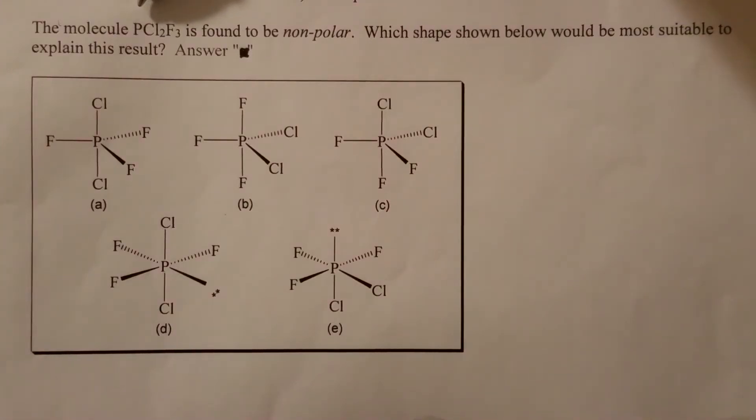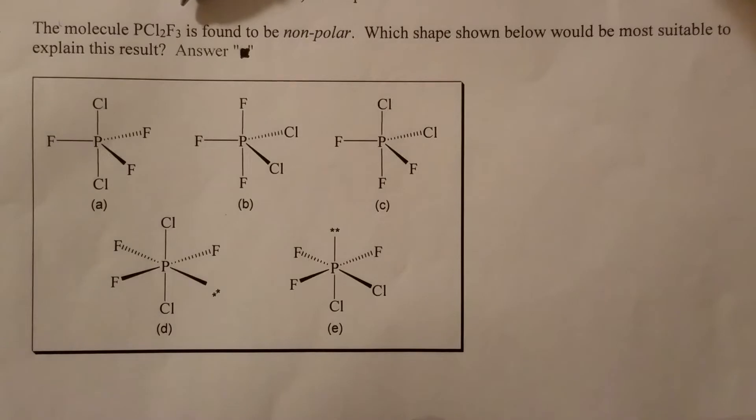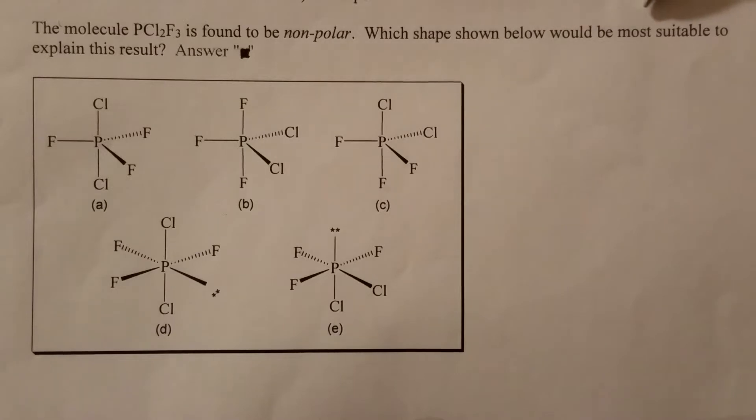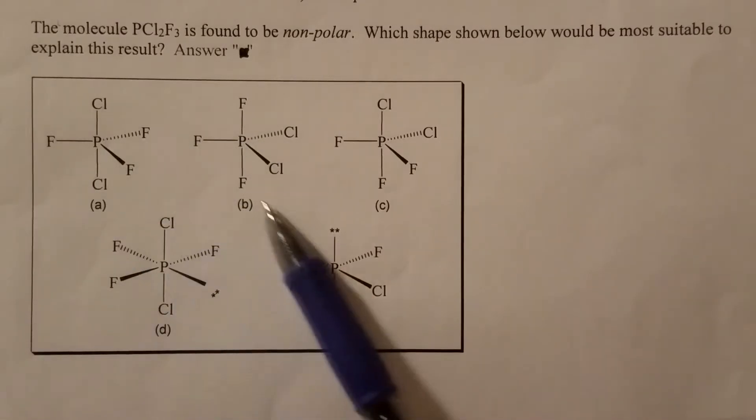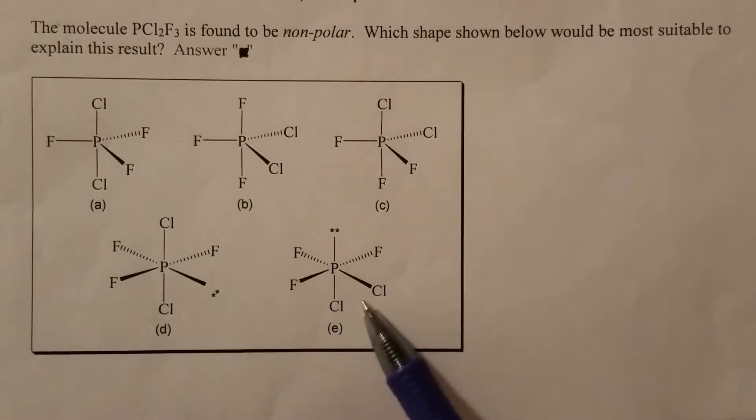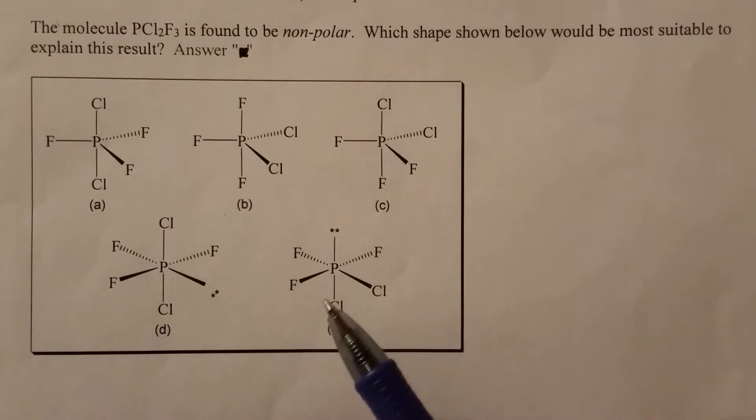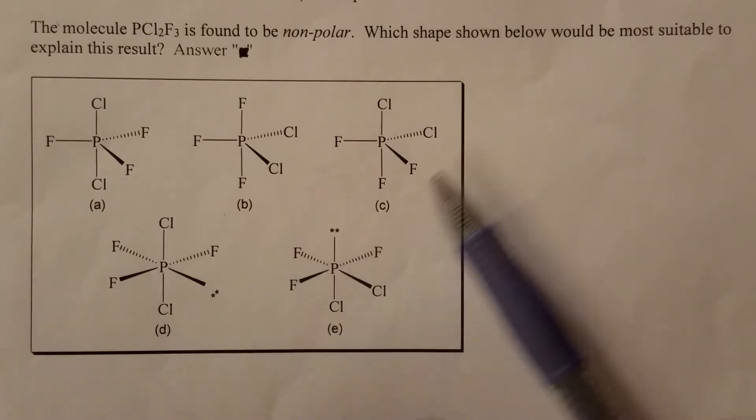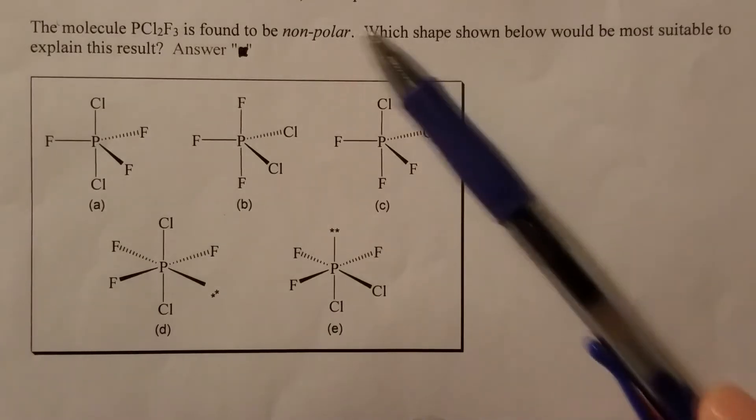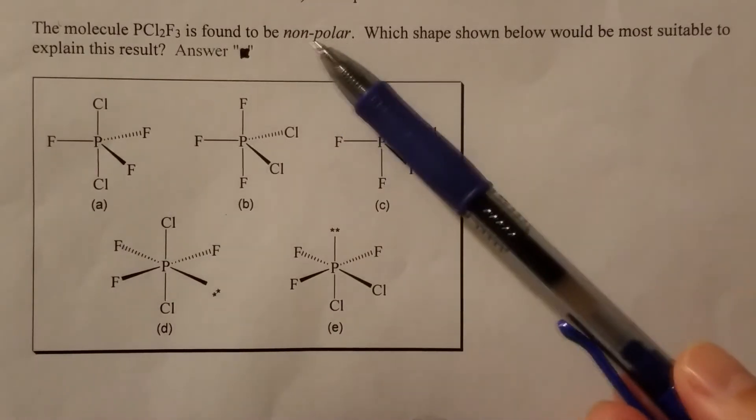The molecule PCl2F3 is found to be non-polar. Which shape shown below will be most suitable to explain the result? So we have five different structures. Which one will be the most suitable to explain the molecule is non-polar?